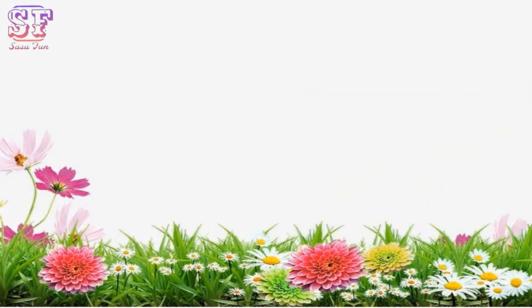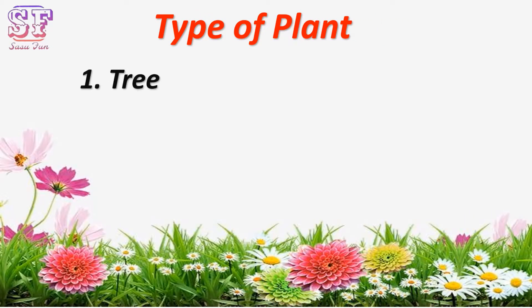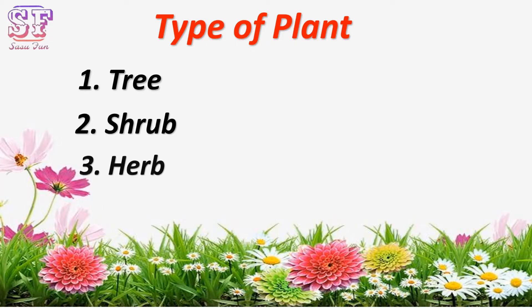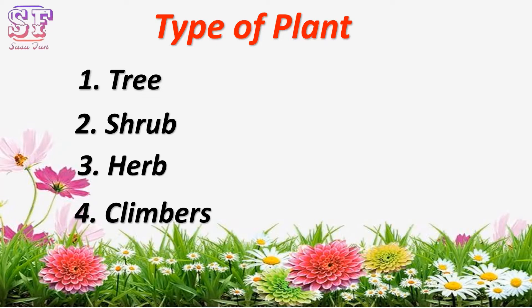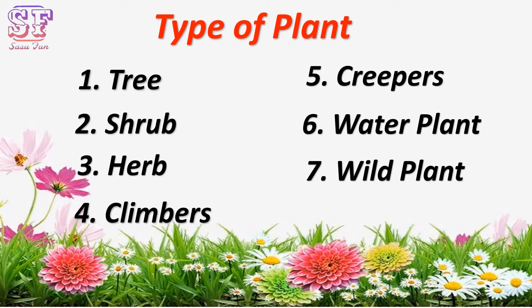Types of plants: first, tree; second, shrub; third, herb; fourth, climber; five, creeper; six, water plant; seventh, wild plant; eighth, weeds.